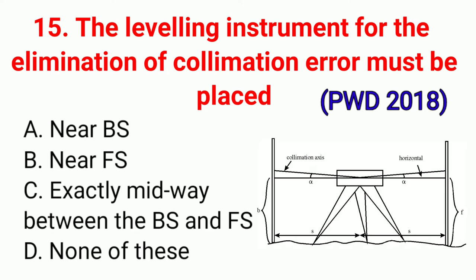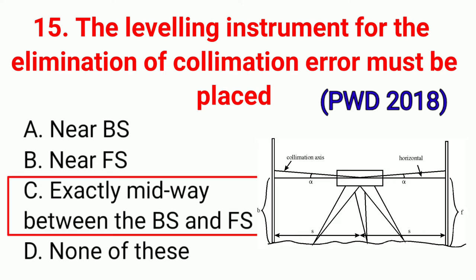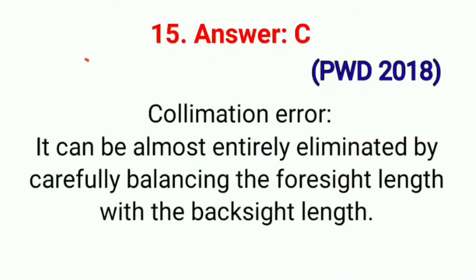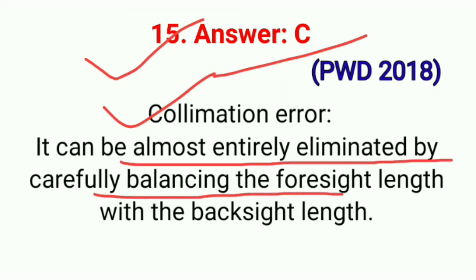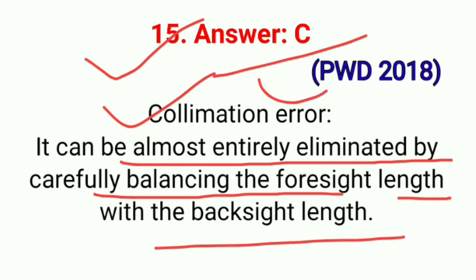Question No. 15. The leveling instrument for the elimination of collimation error must be placed. Correct option C: Exactly midway between the BS and FS. Collimation error can be almost entirely eliminated by carefully balancing the foresight length with the backsight length. Correct option C.